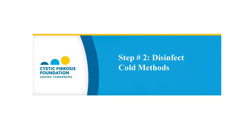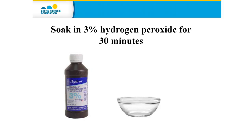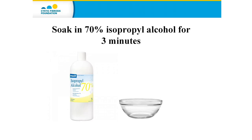Now let's review the cold methods for disinfecting your nebulizer. There are two recommended options. One is 3% hydrogen peroxide — soak your nebulizer parts for 30 minutes. The second option is using 70 to 90% isopropyl alcohol, otherwise known as rubbing alcohol. You soak your clean nebulizer parts for three minutes.